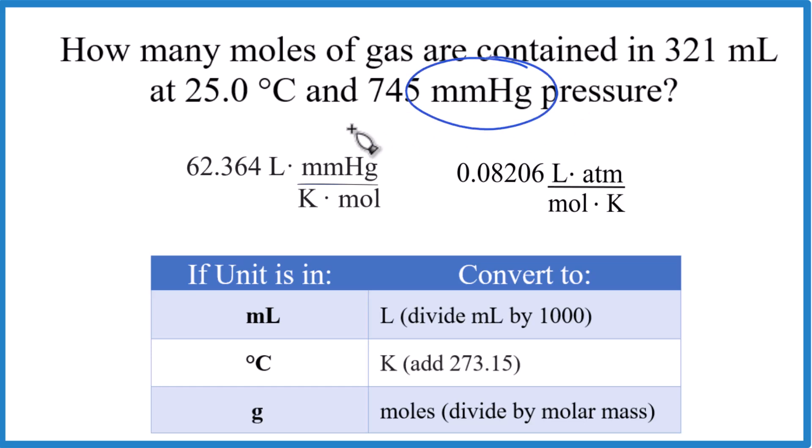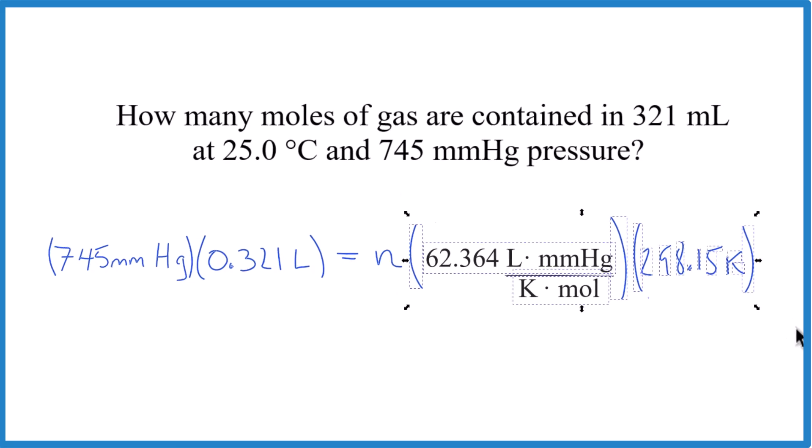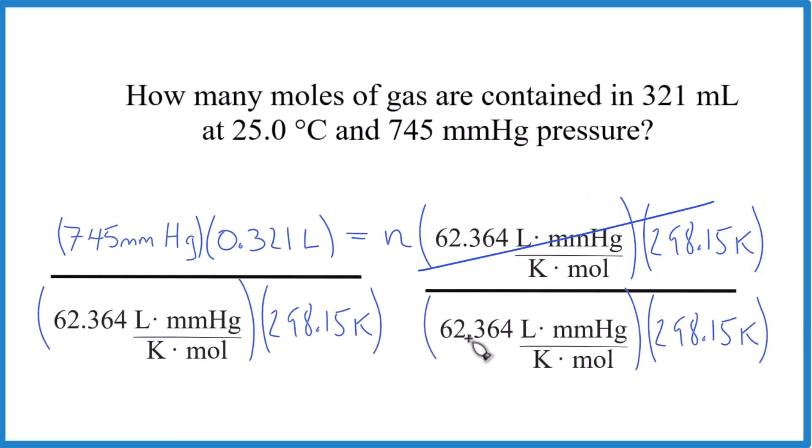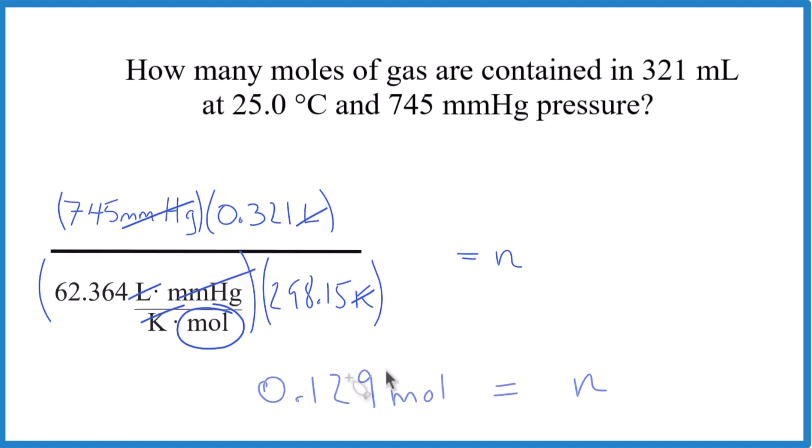So since our pressure is in millimeters of mercury, we'll use this value for R, although you could convert to atmospheres and use this value if you wanted. Here's how I set this up. Since I have millimeters of mercury here, I chose the R that had that value in its units here. I changed my milliliters to liters, and then my degrees Celsius to Kelvin. Divide both sides by this here. So all of that cancels out. Now, the units, they cancel out. I'm left with moles. And when I do the math, I end up with 0.129 moles.